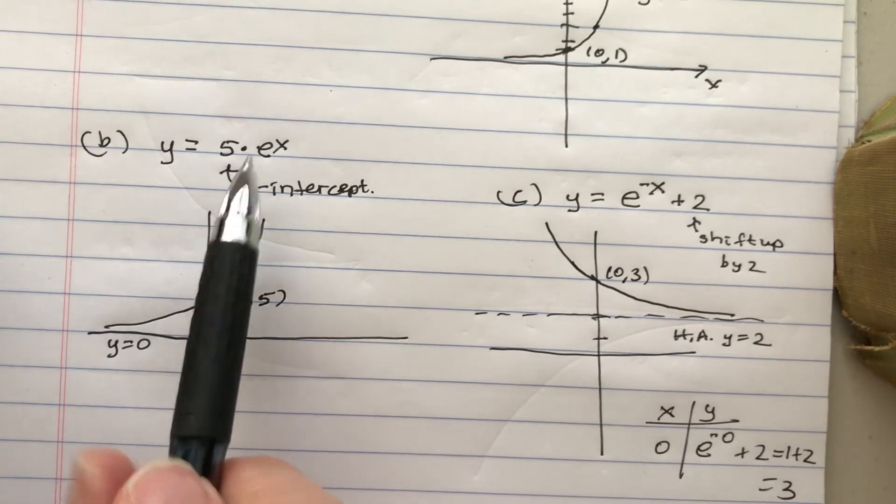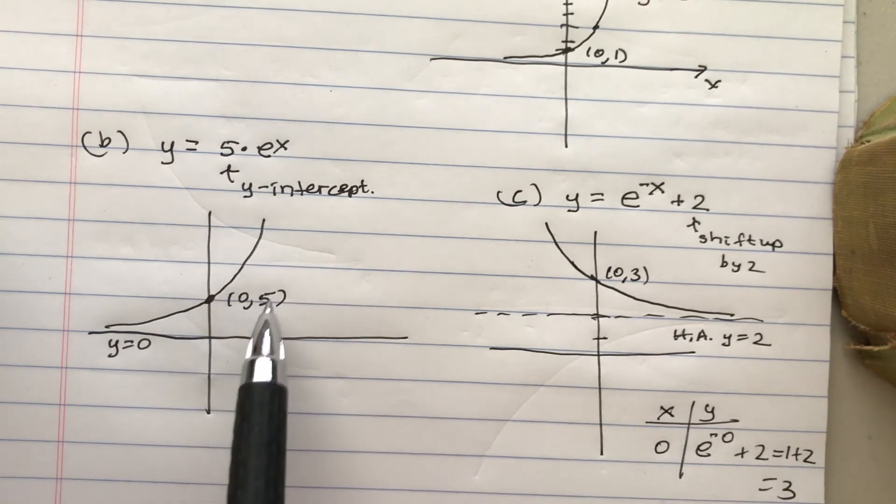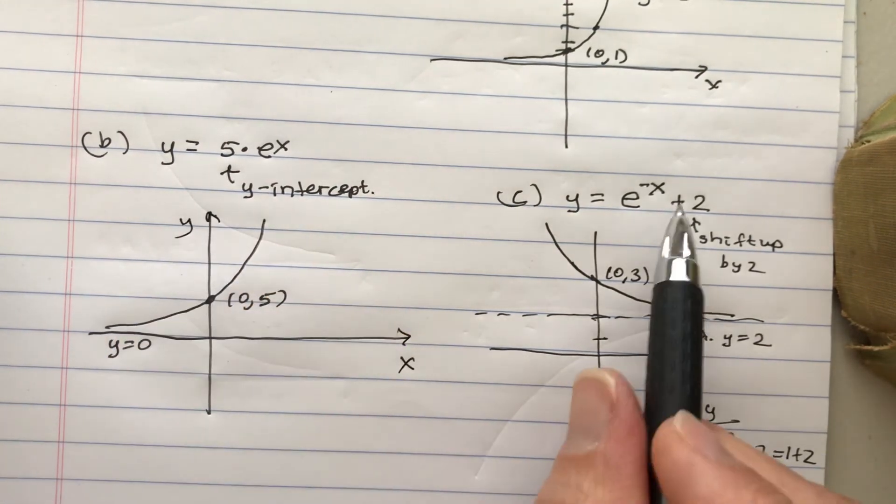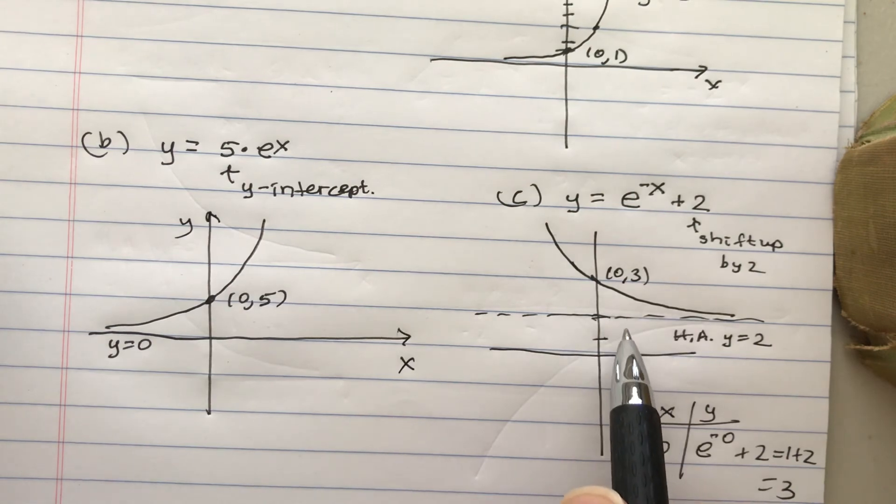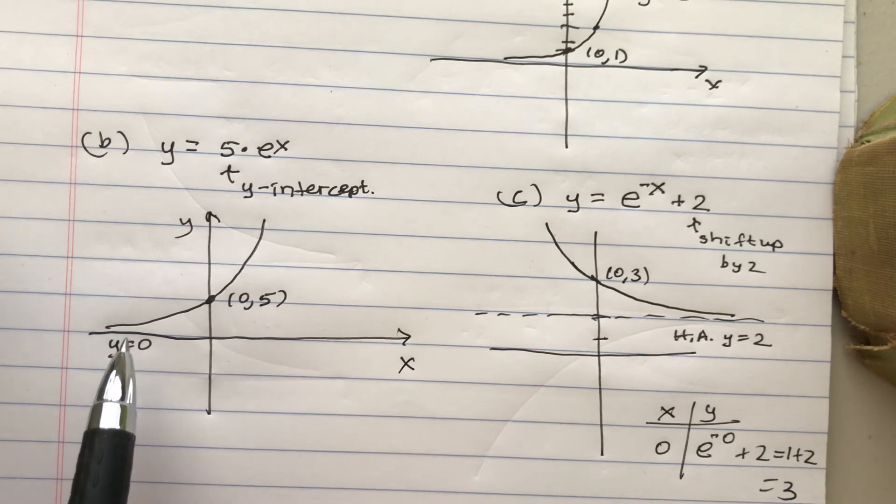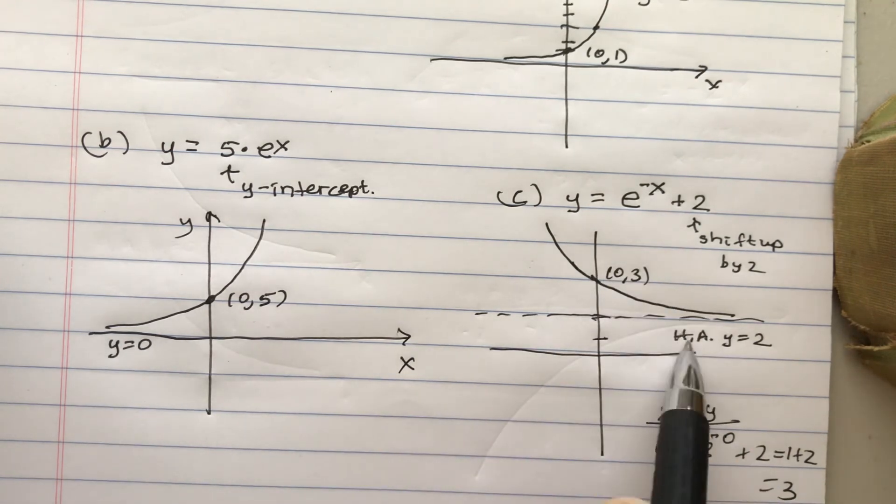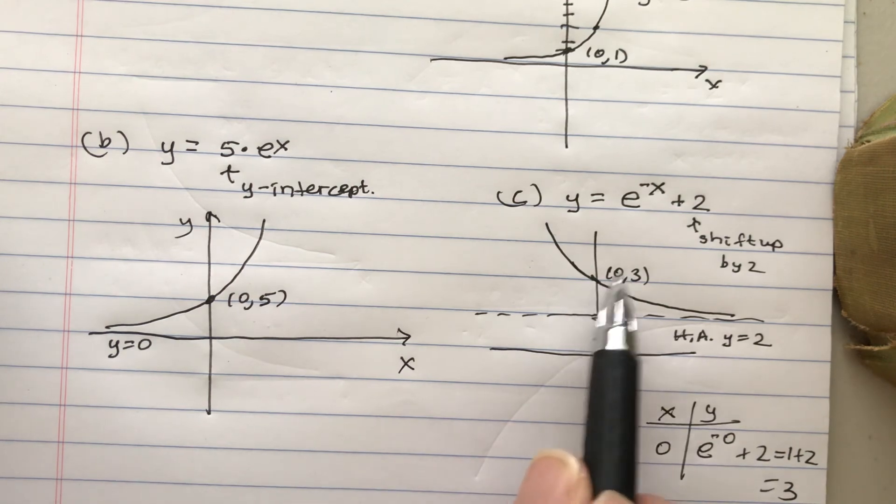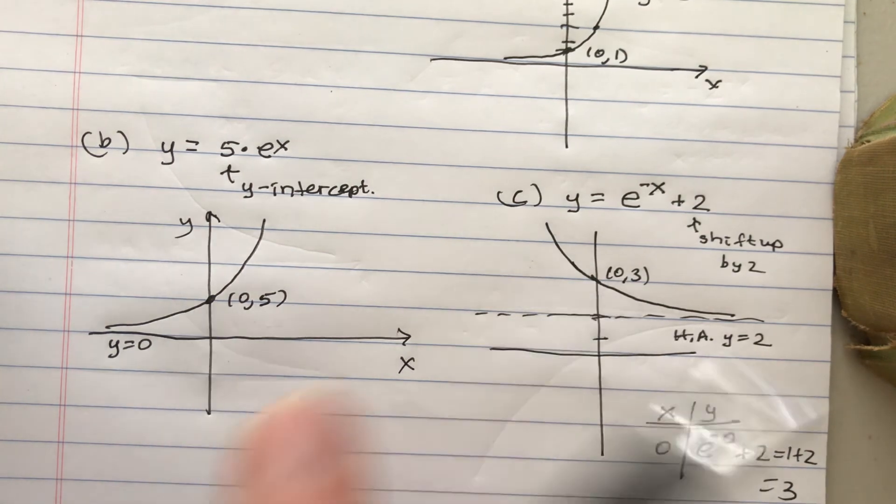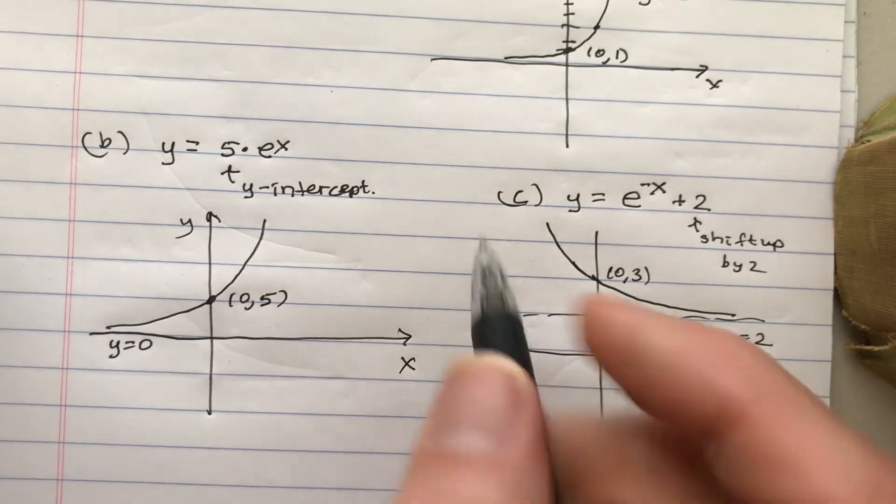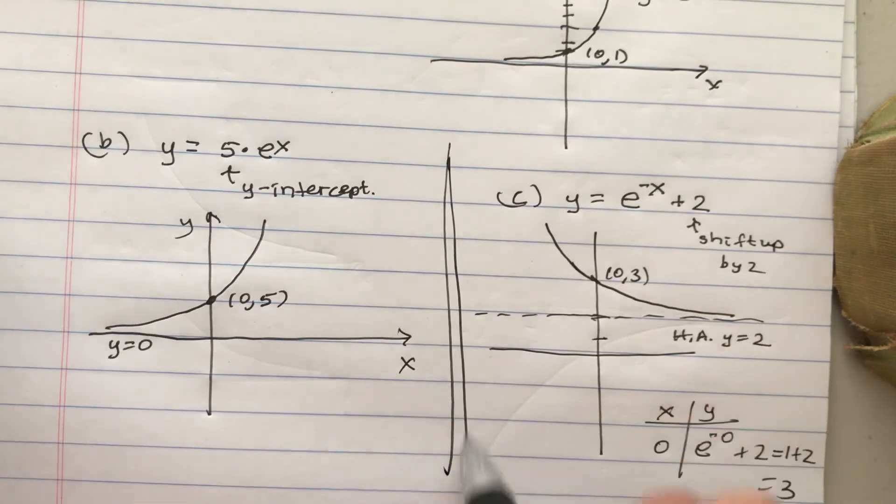So multiplying by 5 stretches the graph out and changes the y-intercept. Adding 2 does not, it shifts the graph up. So notice when you multiply by 5 we still have the same horizontal asymptote. Here adding 2 shifts this up, so the horizontal asymptote changes and so does the intercept. These aren't to the same scale, which is maybe not so great, but if you look at them next to each other, they're at different scales.